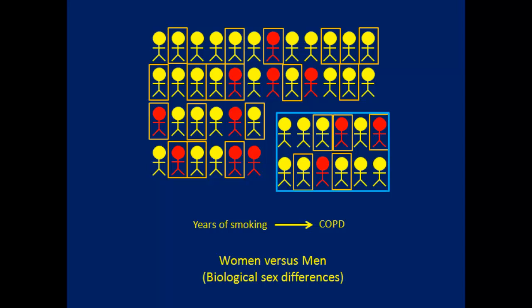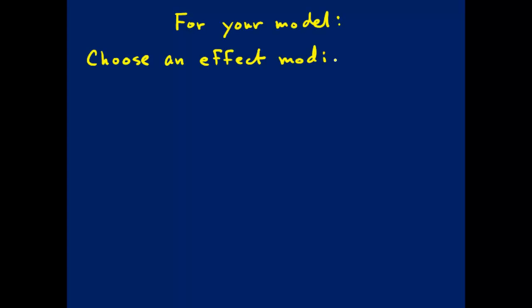Finally, another example is whether the effects of exposure are different in women compared to men — looking for effect modification by biological sex. There are many examples of ways we might use effect modification to give our hypothesis more texture and depth. My goal is not to create an exhaustive list, but to impress upon you that this is a very useful and versatile tool in your data analysis toolkit. For your model, I want you to choose an effect modifier so we can learn how to use this important tool.